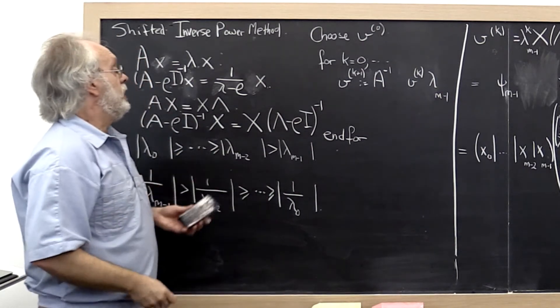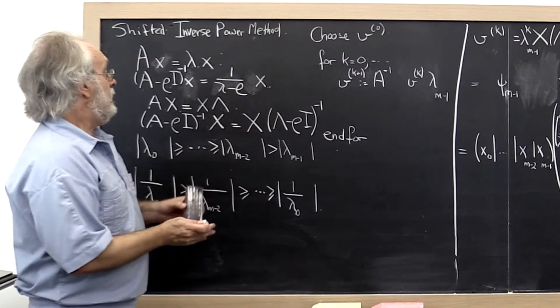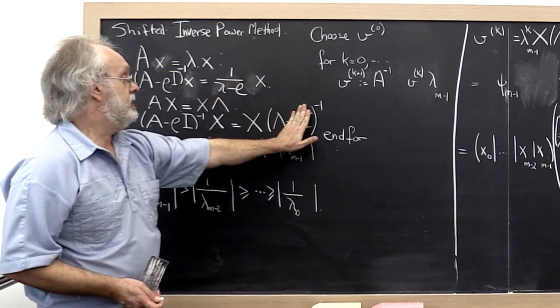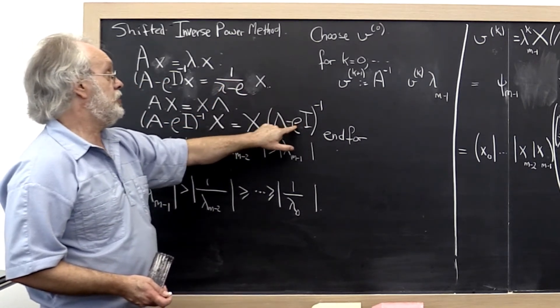When we discussed the inverse power method, rho was equal to zero and we just got this and that. Now we merely shift it.